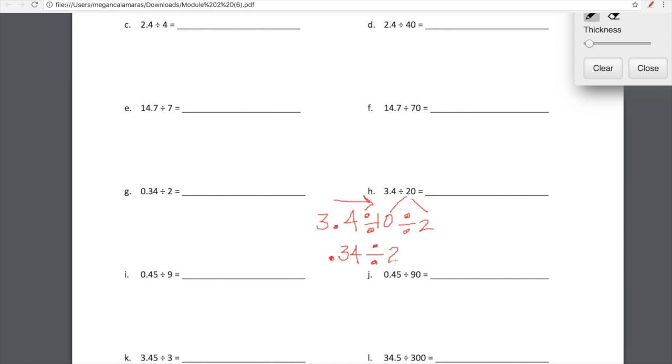Now all we have to do is divide 0.34 by 2. Well, we did that work over here and we are absolutely able to use what we already know and apply it to our current problem. So what we have here is 34 hundredths, just like we had in G, and we're dividing that by 2, which we have already decided is 17 hundredths. I hope that this is making a little bit more sense.